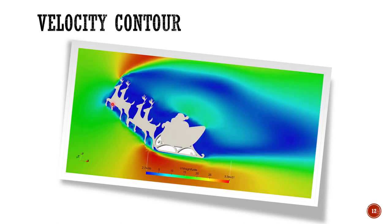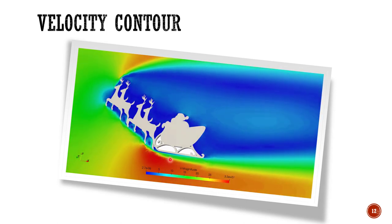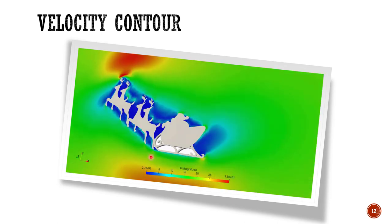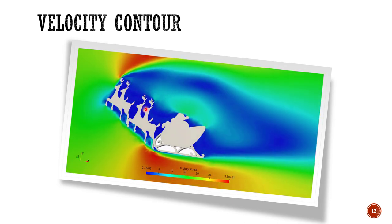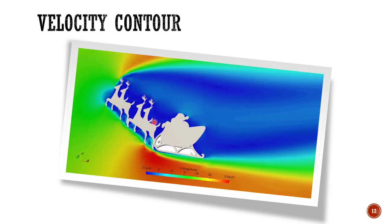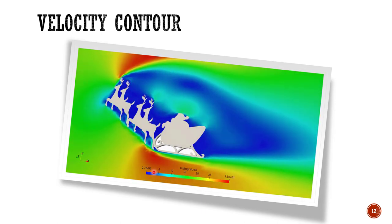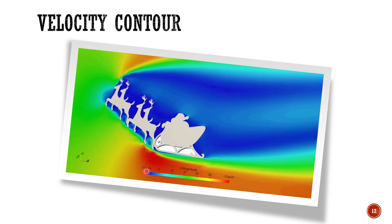So wherever you see the red color, it is showing us that the velocity is 33 meters per second. And wherever we are seeing the blue color, we can say that the velocity is zero. You can even see the values in between the minimum and the maximum value of the legend scale.